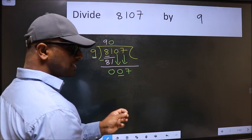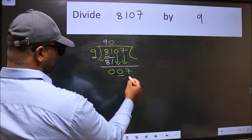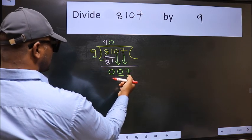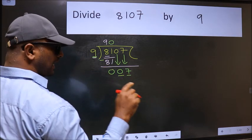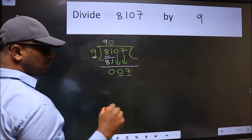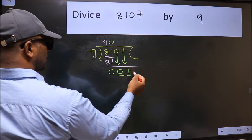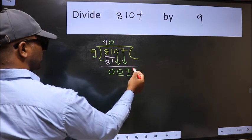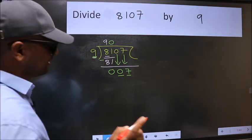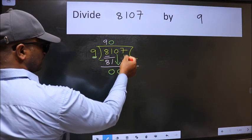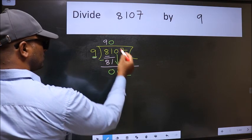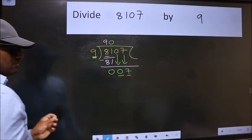And the mistake is this. Here we have 7 and here 9. 7 is smaller than 9. And we don't have any more numbers to bring it down. So what many do is they directly put dot, take 0, which is wrong. Why is it wrong? Because just now you brought this number down. And in the same step, you want to put dot, take 0, which is wrong.